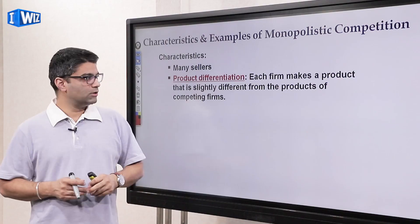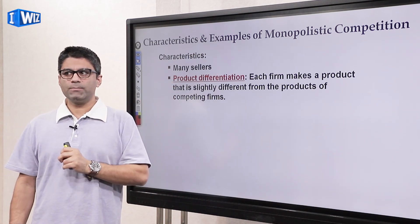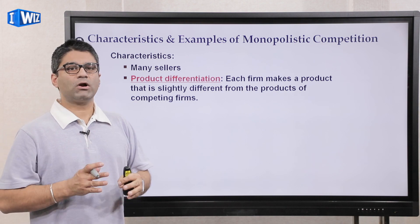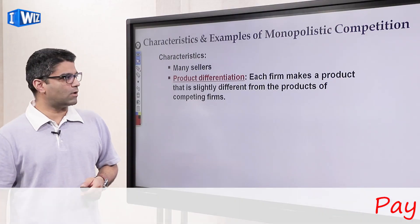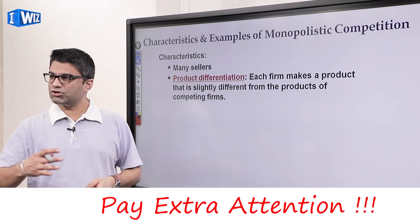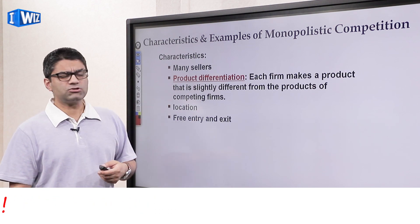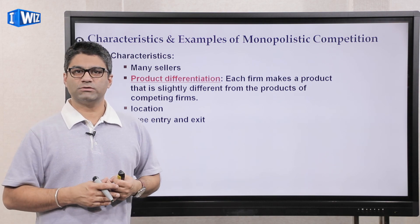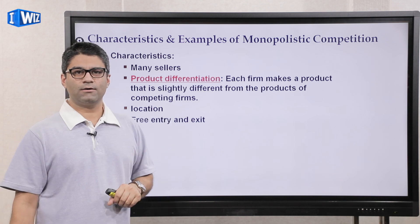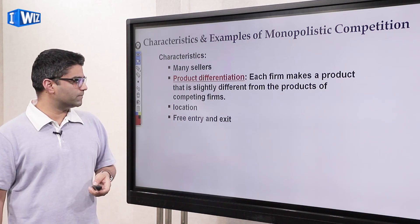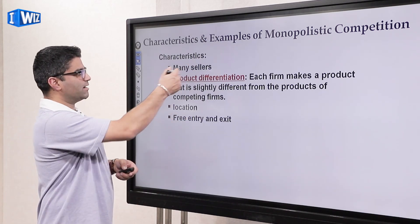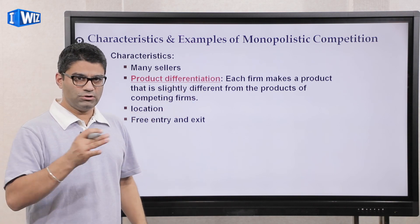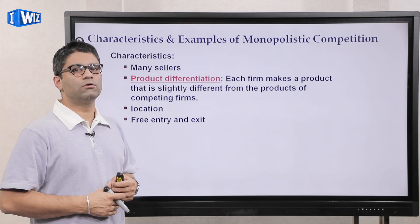In monopolistic competition there are many sellers, similar to perfect competition. One key difference is product differentiation — each producer sells similar but not identical goods. They might also differentiate their product due to location, so the product might be identical but they're able to charge a different price because of location. Petrol pumps and gas stations in a city are sometimes operating in a monopolistic competitive market due to location. There is also free entry and exit, similar to perfect competition, but the fact that they're not selling identical goods means they have some ability to control the price they charge.